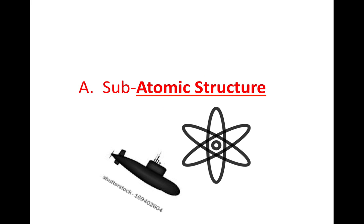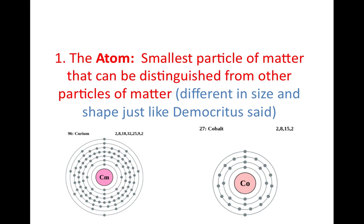Let's go ahead and start with subatomic structure. Sub means to go below, and we're going to go below the structure of the atom as Thompson did when he discovered the electron. The atom is the smallest particle of matter that can be distinguished from other particles of matter.